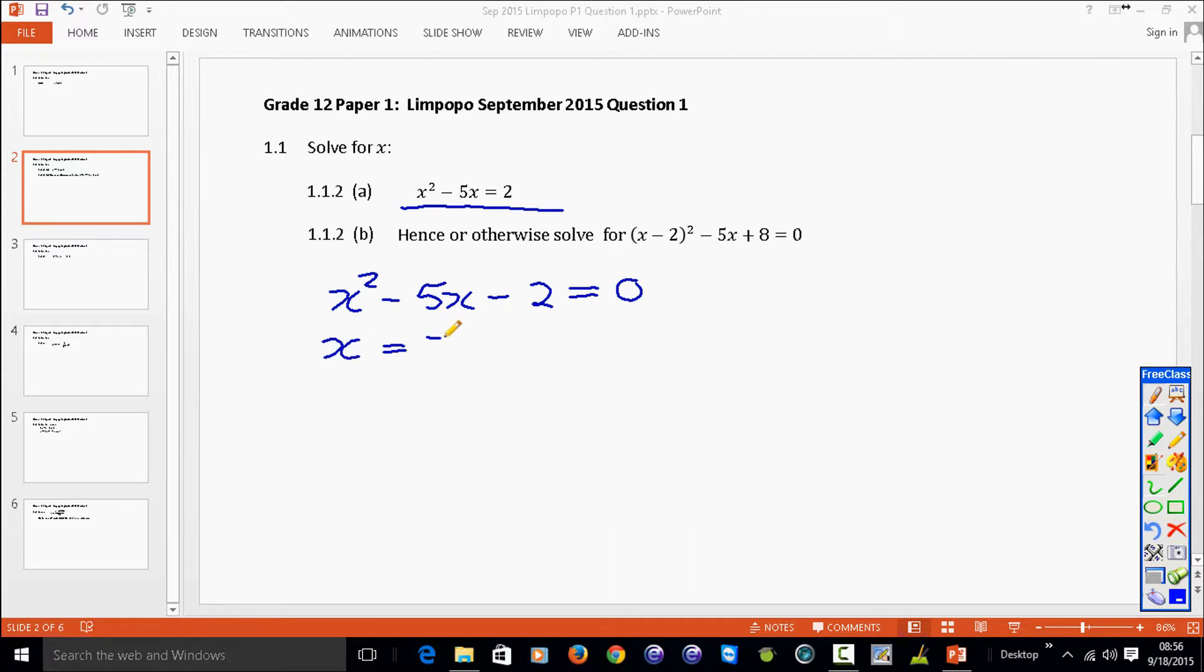x is equal to minus b plus or minus the square root of b squared minus 4ac divided by 2a. And you still remember that the a is in front of the x squared, so a is equal to 1, b is in front of the x, b is negative 5, and c is the constant which is negative 2.